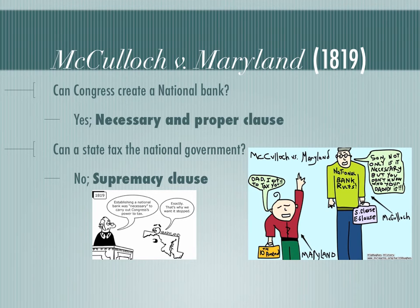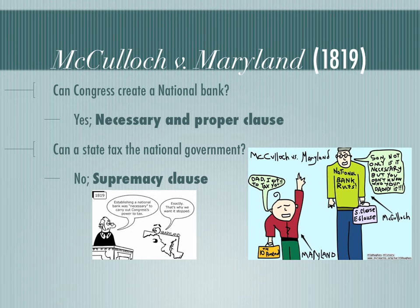The second question: can a state tax the national government? That's what Maryland was trying to do. The answer is no, because of the Supremacy Clause. The national government is supreme — it is superior to the states — and states cannot tax or try to limit the national government. This is a landmark case, the second most important case of this entire year. You will see this on your mock tests, your Unit 1 test, and your midterm. You need to know everything about McCulloch v. Maryland.